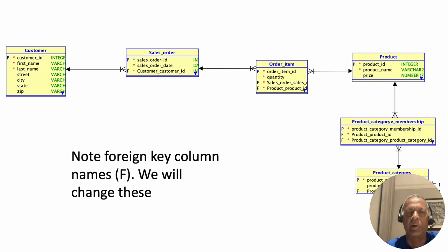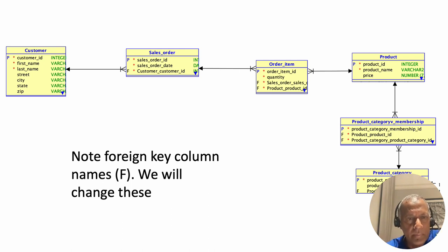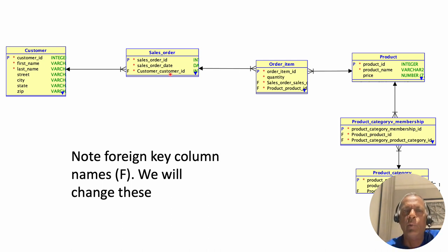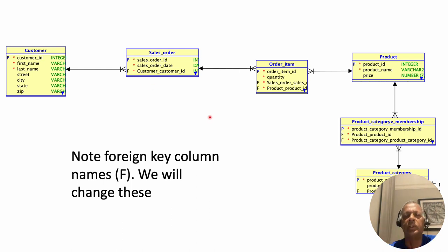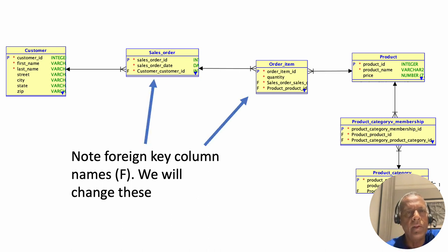Notice the name given to Customer ID — it says 'customer_customer_id'. If we go on to build our application and generate forms, the field name on the form will be called 'customer customer ID', which doesn't look very good. We would like that to appear simply as 'customer_id'. So what we want to do — and this is not mandatory but recommended — is to change the name of that foreign key field and remove the prepended entity type name.